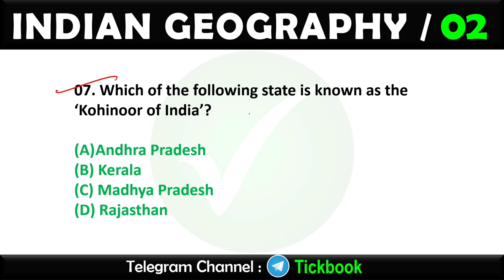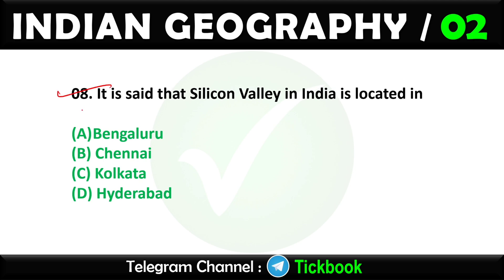Question seven: Which of the following state is known as the Kohinoor of India? Option number A is the right answer: Andhra Pradesh. Question eight: It is said that Silicon Valley in India is located in. Option number A is the right answer: Bengaluru.